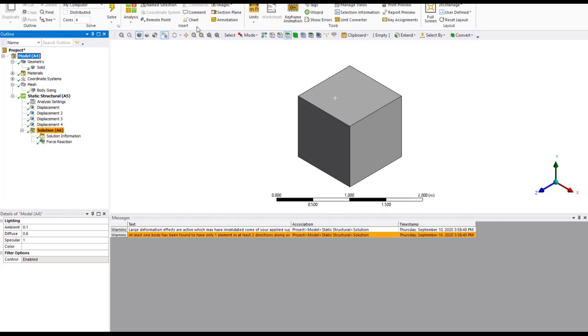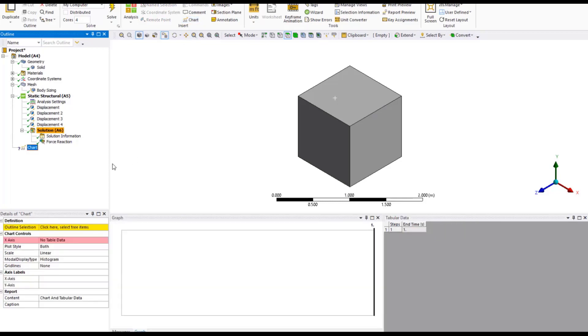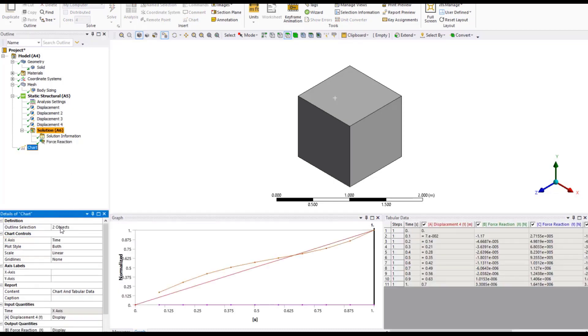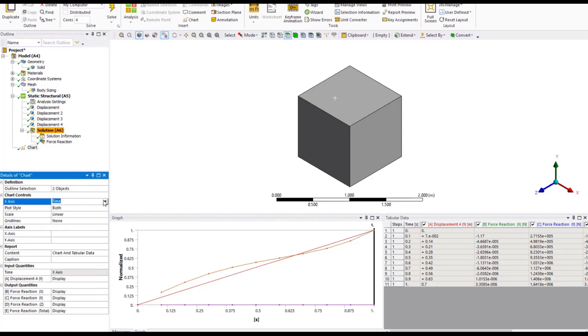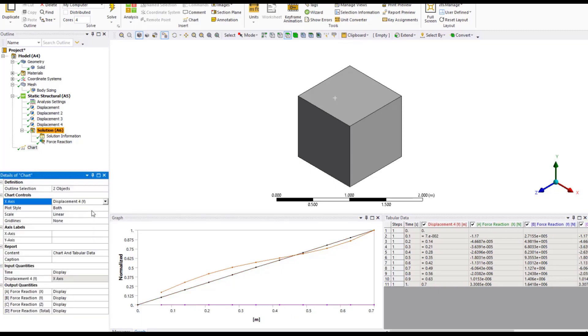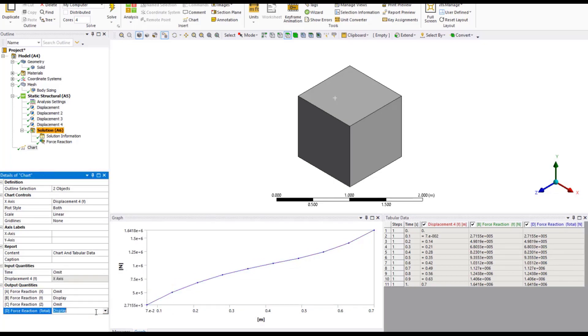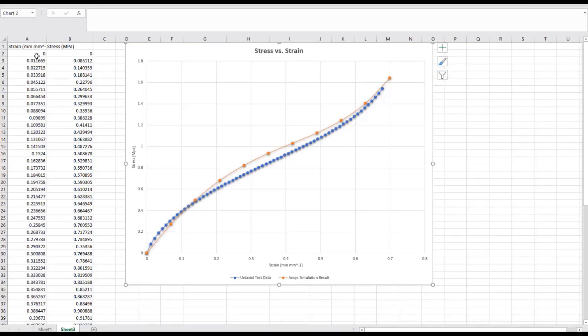So let's go ahead and create a force-displacement chart to extract this data. Select force-reaction object and displacement object from model tree and insert chart. Set the x-axis to maximum of displacement. Set time to omit. What we have here are values of engineering stresses and strains. Comparing them against the data we input earlier, we can see that they correlate very well. This concludes the demo.